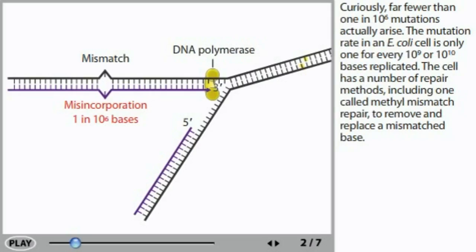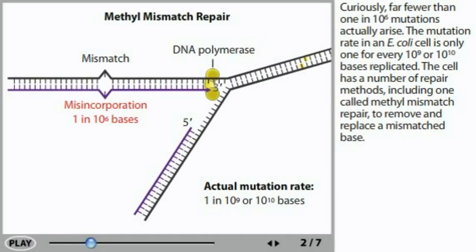Curiously, far fewer than one in 10 to the 6 mutations actually arise. The mutation rate in an E. coli cell is only one for every 10 to the 9 or 10 to the 10 bases replicated. The cell has a number of repair methods, including one called methyl mismatch repair to remove and replace a mismatched base.